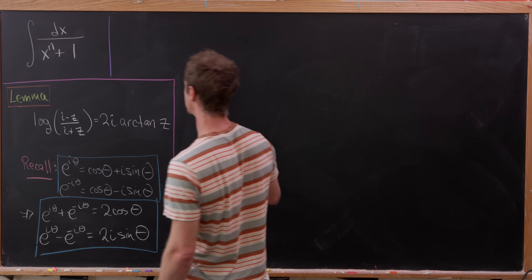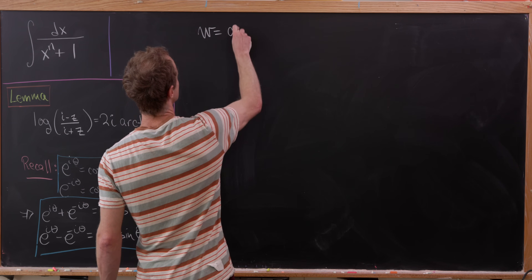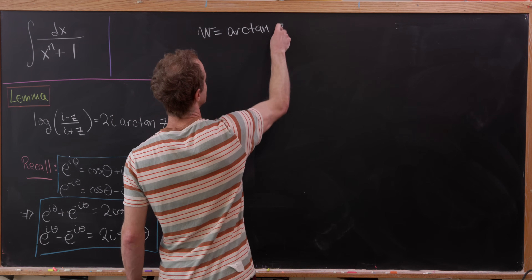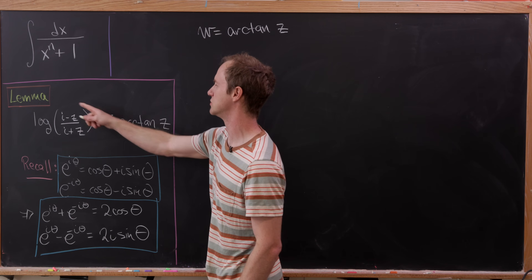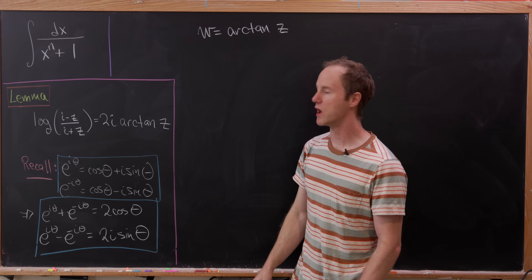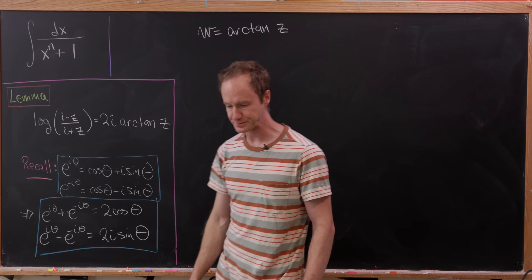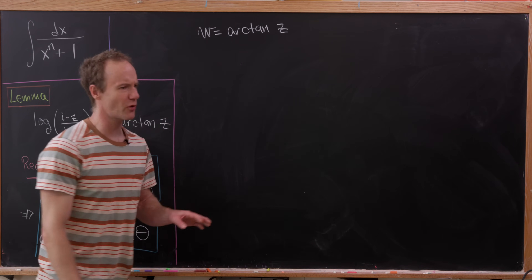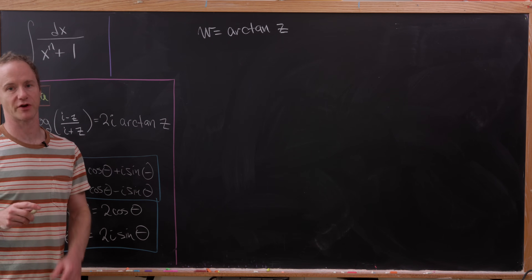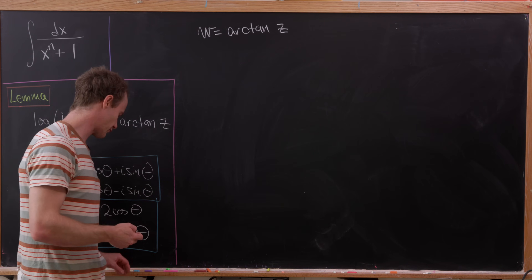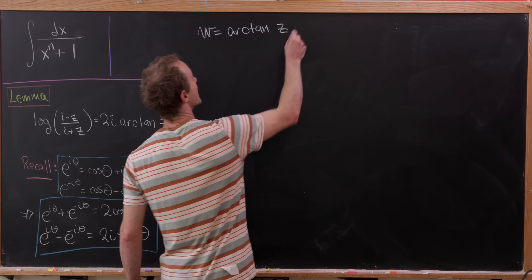We'll start by setting w equal to the arctan of z, and then we'll show that w is also equal to 1 over 2 times i times that logarithm. I'd like to point out that both of these functions in the complex world are multivalued, and we're not really going to touch on that too carefully here.